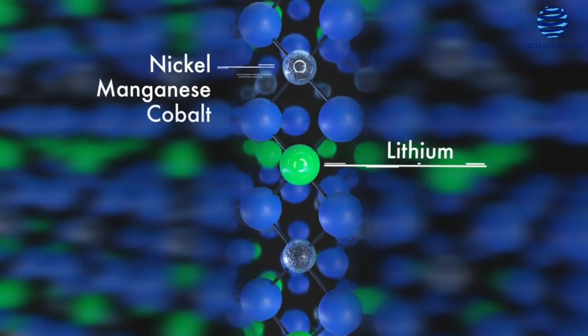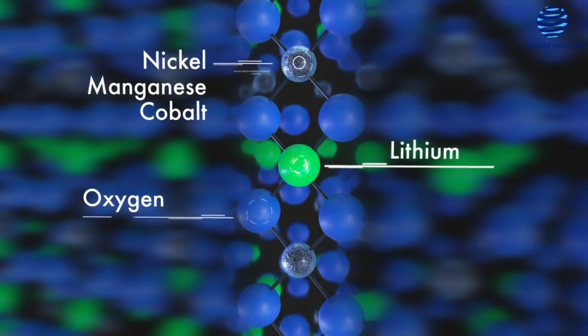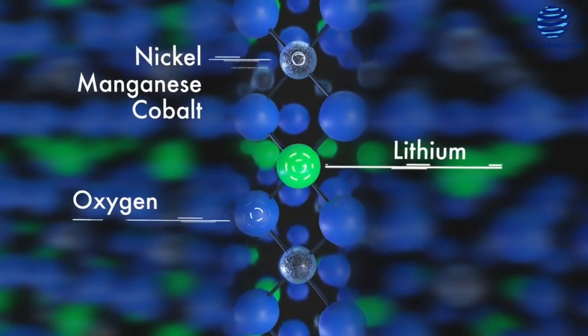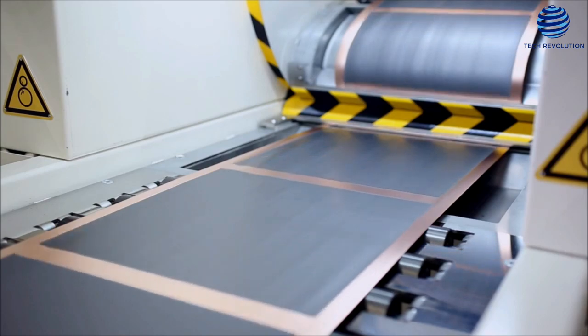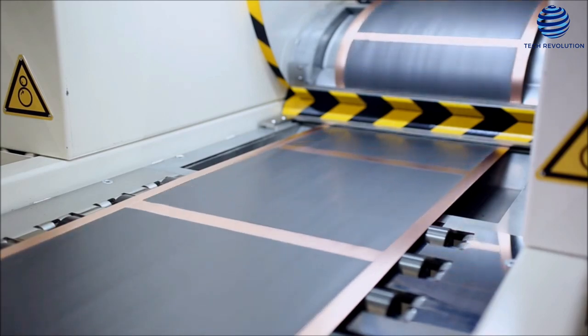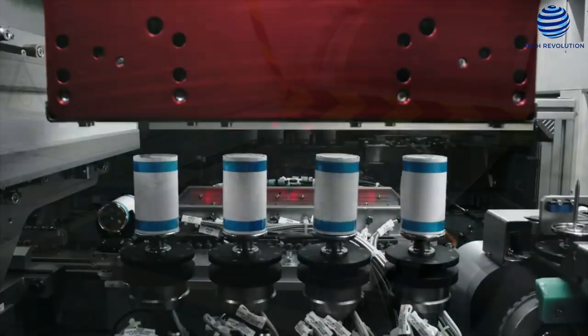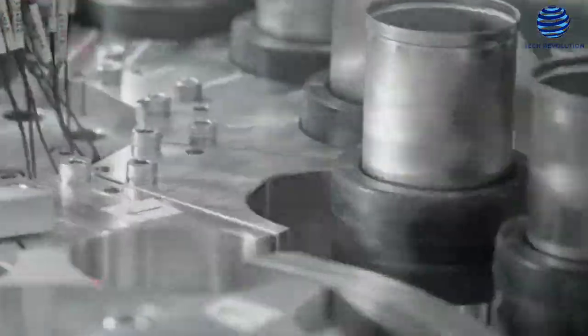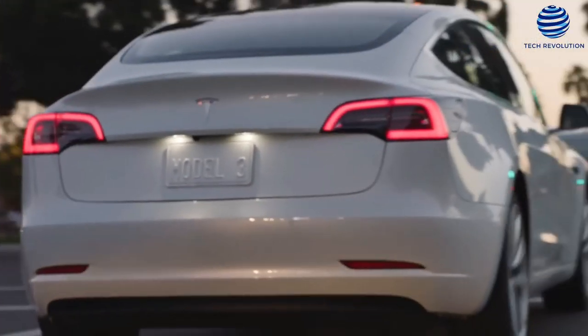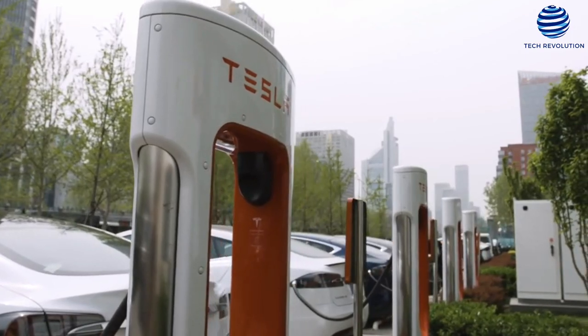Tesla also introduced high-nickel cathodes, which eliminate the need for cobalt, as well as improved silicon battery chemistry, in which they stabilize the surface with an elastic ion-conducting polymer coating, allowing for a higher percentage of cheap commodified silicon to be used in cell manufacturing. These upgrades are predicted to result in a 56% reduction in Tesla's cost per kilowatt-hour.